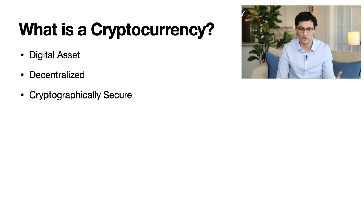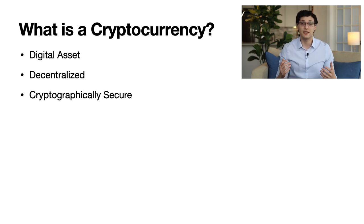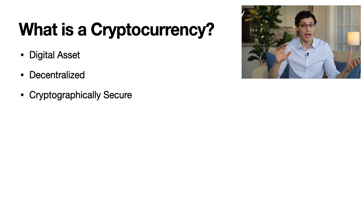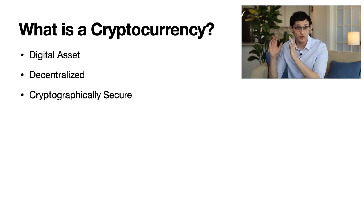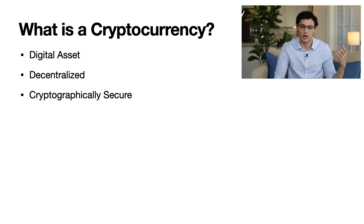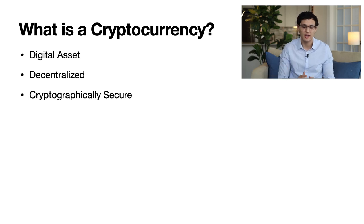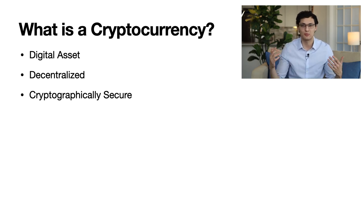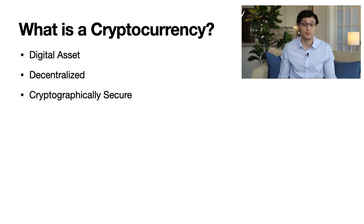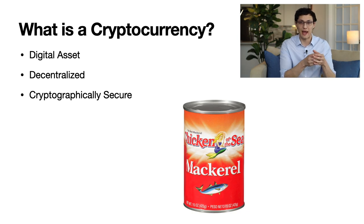Now let's get to the core issue: what actually is a cryptocurrency? A cryptocurrency fundamentally is a digital asset that is decentralized and cryptographically secure. Decentralization is accomplished using a tool known as the blockchain. You can have a blockchain without a cryptocurrency, but you cannot have a cryptocurrency without first having a blockchain that it runs on. There's a great example we can use to explain the distributed ledger technology behind blockchain — a podcast on Planet Money about a guy named Charlie Shrem, who was arrested for breaking some rules related to Bitcoin trading and went to prison.